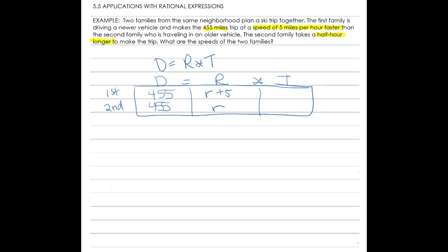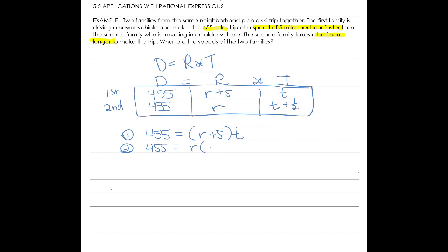We have two equations and two unknowns. First equation: 455 equals (r + 5) times t. Second equation: 455 equals r times (t + 1/2). I'm going to solve the first equation for t and then plug it into the second equation.